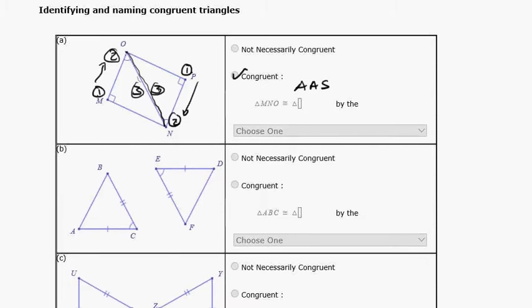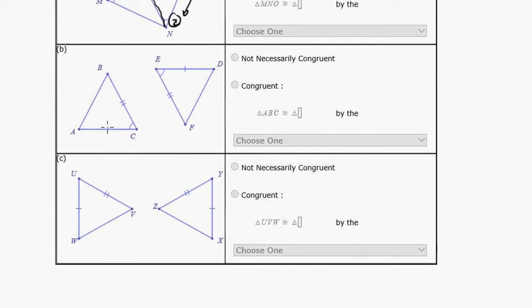A couple more real quick. This one we have side. Side, side, angle, then the angle, then a side, then a side. Think of it as three: one, two, three, one, two, three. So I'm going to say they're congruent by angle - nope, talking too fast - by side, angle, side. Okay, because the angle's in the middle.